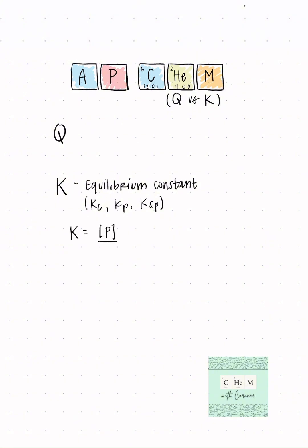It's always going to be the concentration of the products raised to the power of the coefficients from the balanced equation over the concentration of the reactants, again raised to the power of the coefficients from the balanced reaction. And you never include solids or pure liquids in any of these equilibrium expressions because they don't impact equilibrium.